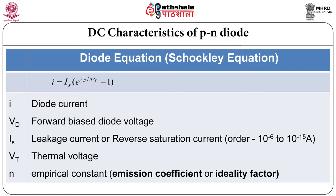The Shockley equation is given by I equals I_s times e raised to V_d by n*V_t, minus 1. Here I is the diode current and V_d is the forward bias diode voltage.